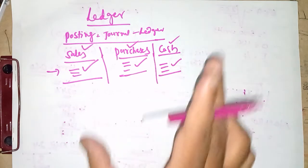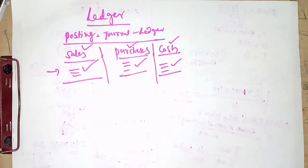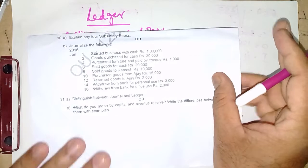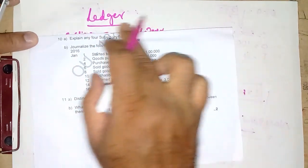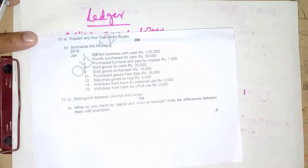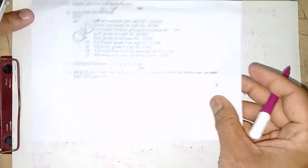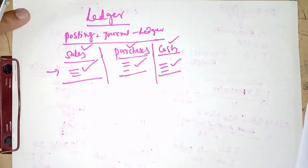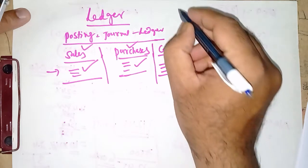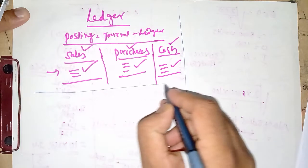I hope the concept of ledger is clear. We will now understand it with the help of a question — a Osmania University BBA question on journal. With this question we will prepare the journal and at the same time prepare the ledger. We will prepare the journal format first. As you are already aware, the journal format contains columns such as date, particulars, LF (ledger folio), debit, and credit.